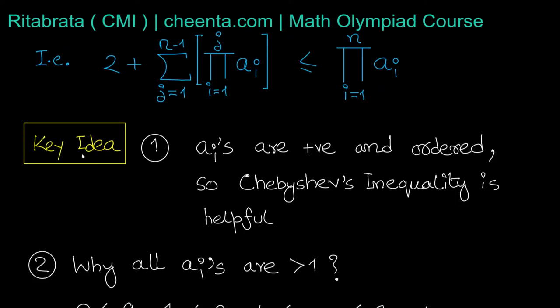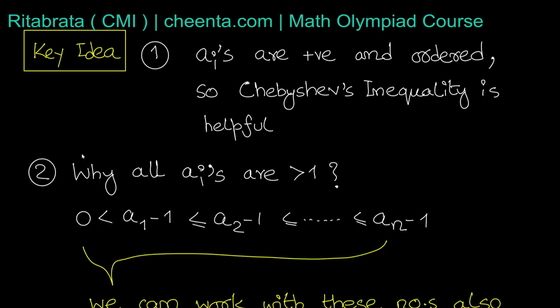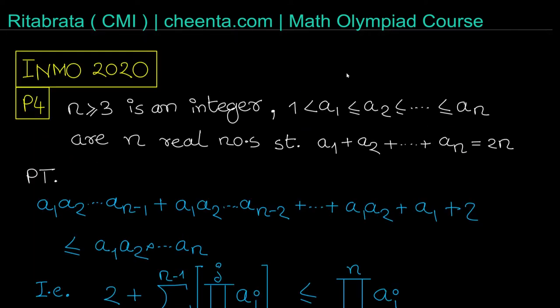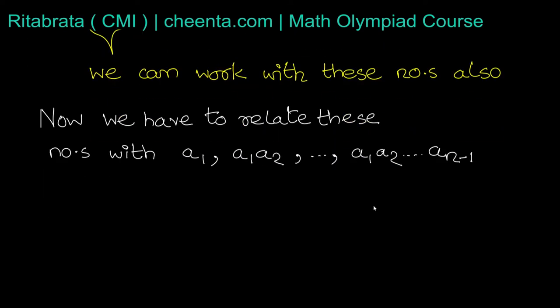To solve this, we have some key ideas. As all aᵢ are positive and ordered, Chebyshev's inequality is really helpful. We also have one interesting thing: all aᵢ are strictly greater than 1. In Chebyshev's inequality, we need that the sequence terms should be positive or at least non-negative. But here, as all aᵢ are strictly greater than 1, instead of aᵢ I can work with aᵢ - 1. This is also ordered and all terms are positive, so this is really helpful. We have to relate it to a₁, a₁a₂, ..., a₁a₂...aₙ₋₁ because those are the numbers that appear in the question.